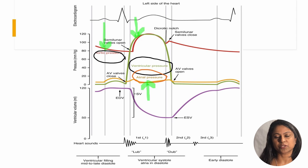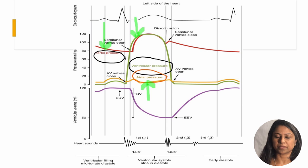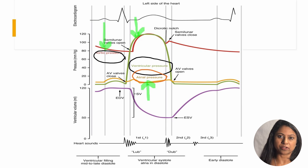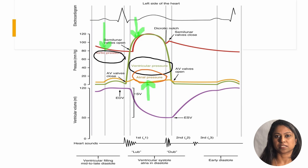The diagram shows a normal cardiac cycle. If you look from top to bottom, you can see the EKG, followed by the aortic pressure tracing, followed by the left atrial pressure tracing, the left ventricular pressure tracing, the left ventricular volume tracing, and then the heart sounds.